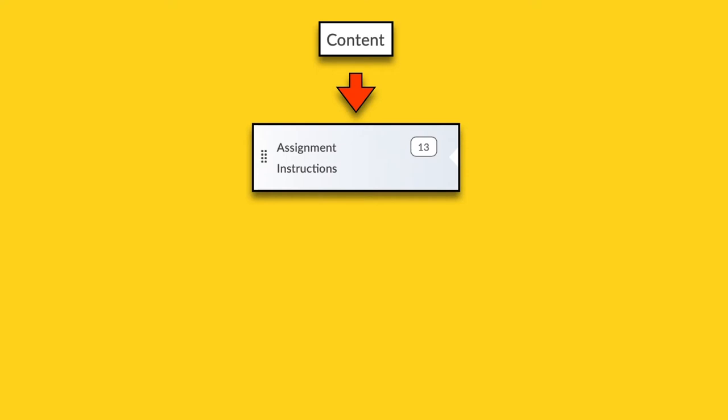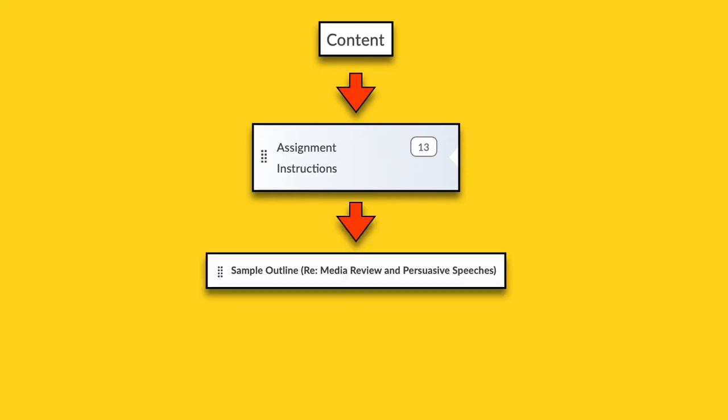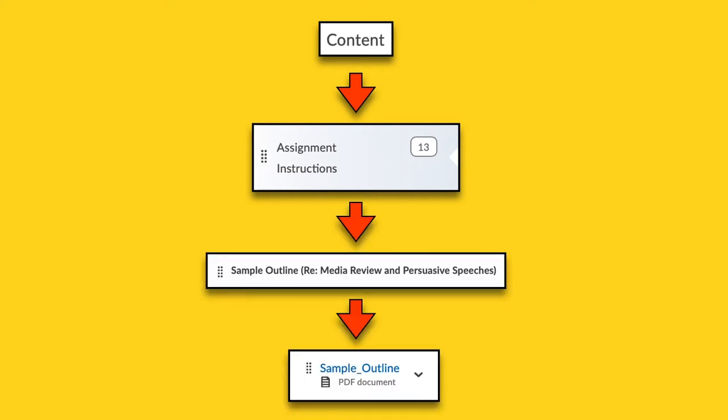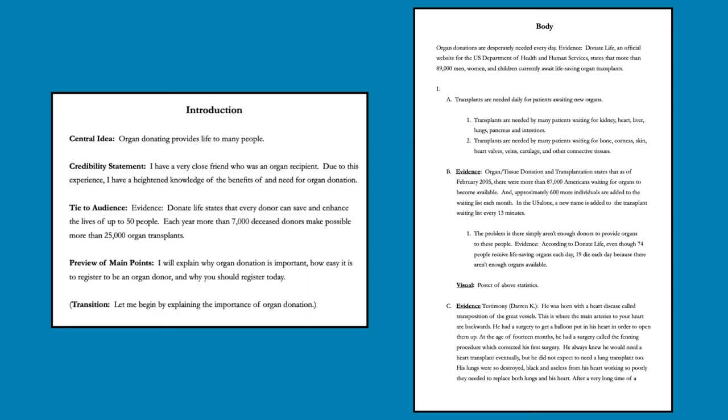If you want an example of how your outline might look, there's one on the D2L course site. To find the sample outline, click Content on the D2L course page, then click Assignment Instructions, then Sample Outline, and finally click on Sample Outline to view or download a PDF. The outline is also available in the appendix section of the course textbook, which you can find under the Readings tab on D2L. Here are two screenshots of that outline — go download it and give it a thorough review.